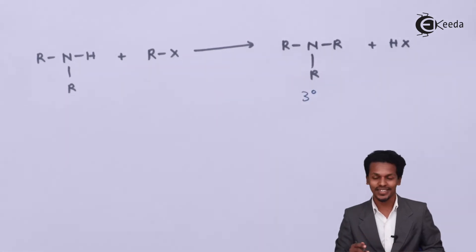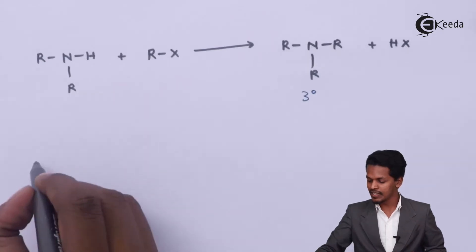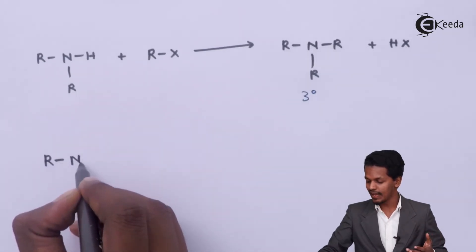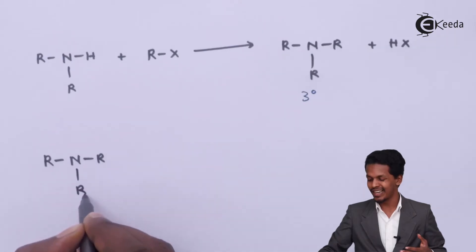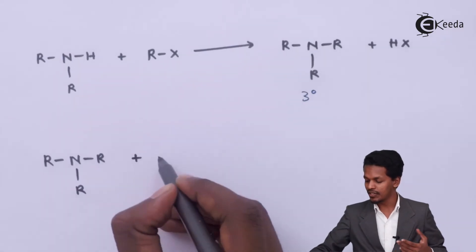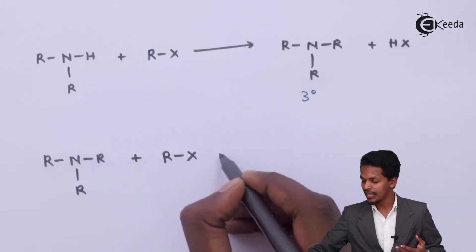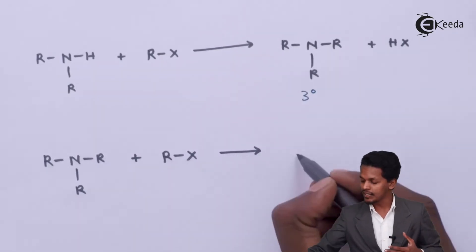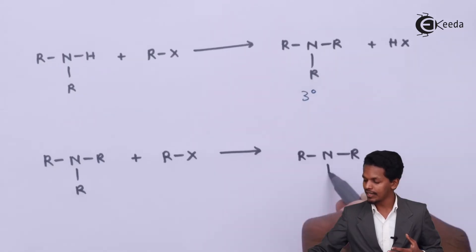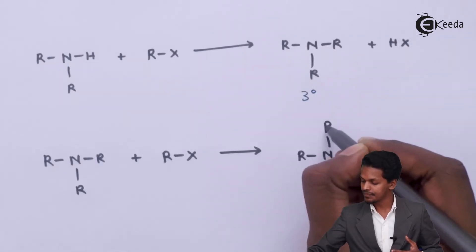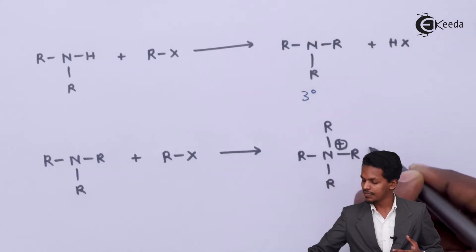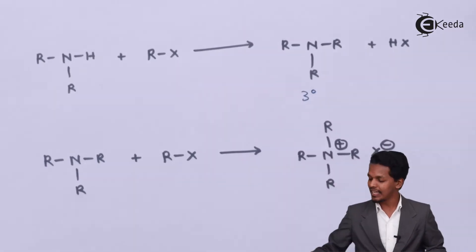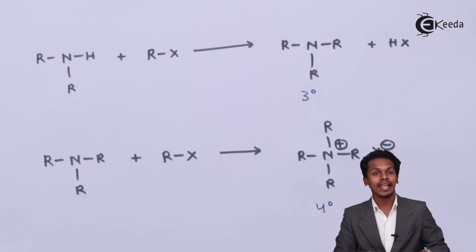Still the reaction doesn't stop here. The tertiary amine R3N can also react with another molecule of RX, and therefore the product we get is a quaternary ammonium salt, that is R4N+ X−. So this is how we can convert an alkyl halide into mixtures of amines.